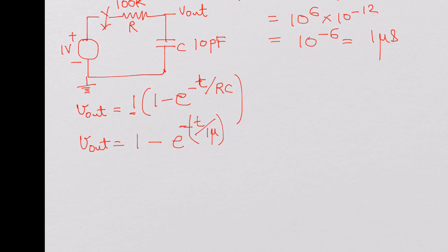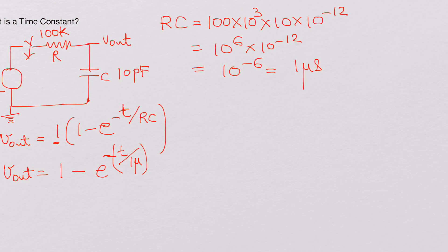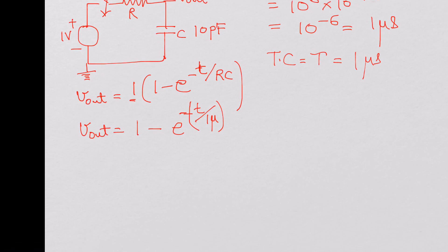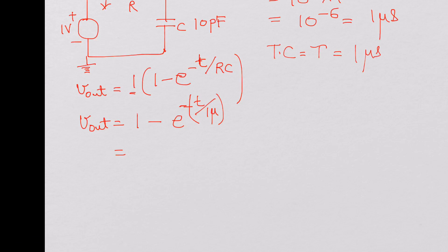So it has the units of time also. That is 1 micro, and that is what is called the time constant for this RC circuit. The time constant, which is also written like tau, is 1 microsecond. It's 1 minus e power minus T by tau, where tau is 1 microsecond.